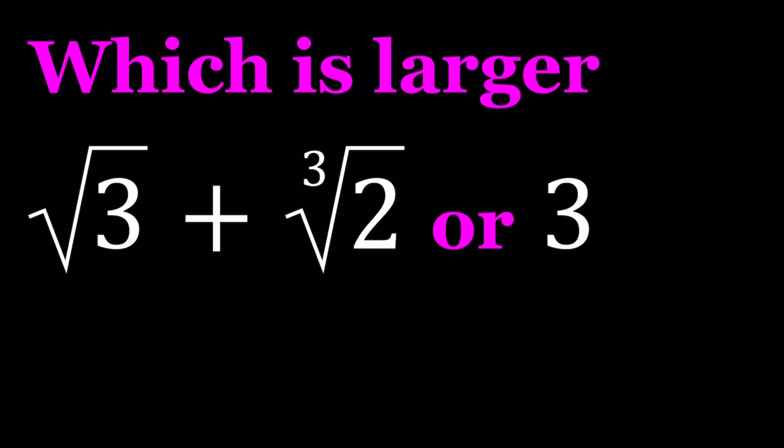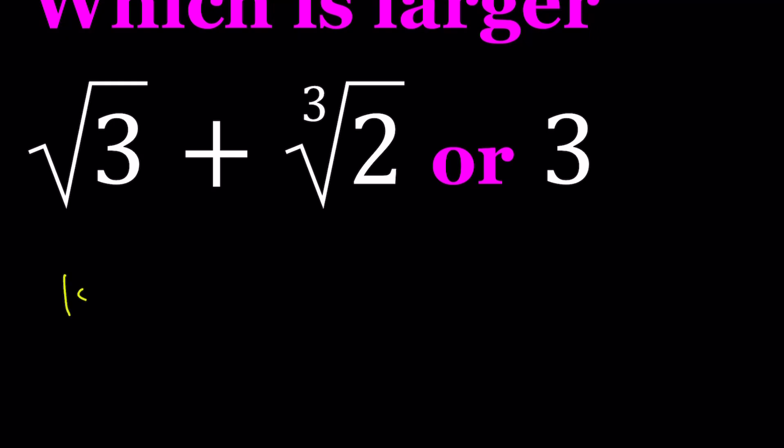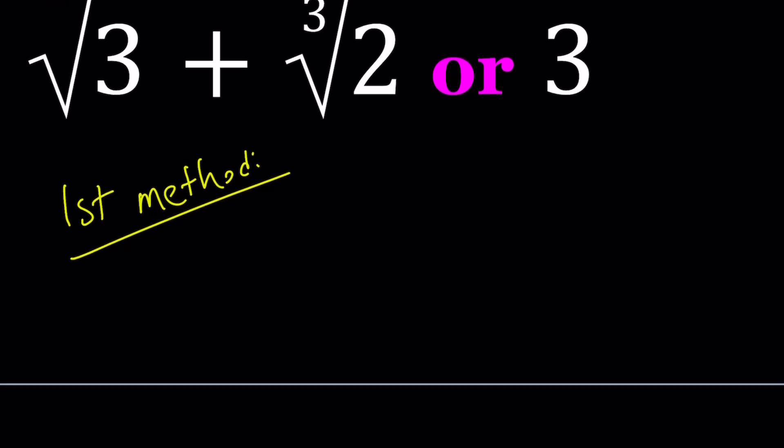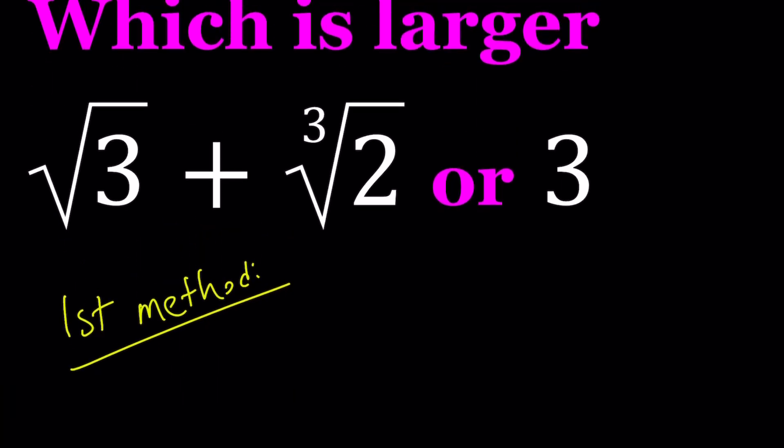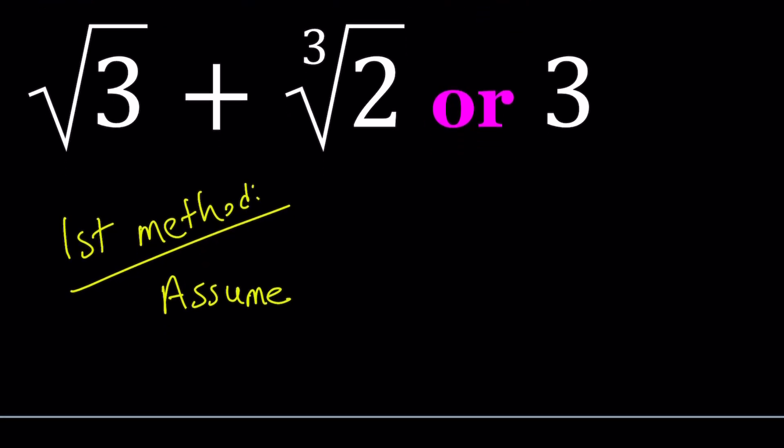So, to be able to find out which number is larger, let's start with the first method. So, for my first method, I'm going to start with an assumption. Because if you're trying to compare two numbers, especially when these numbers are radicals, it makes it easier to work if you make some assumptions like this one. So, I'm going to assume, and this assumption might be right or wrong. I'm not saying this is necessarily true. I have no proof so far. But I'm just going to assume that the square root of 3 plus the cube root of 2 is greater than 3.